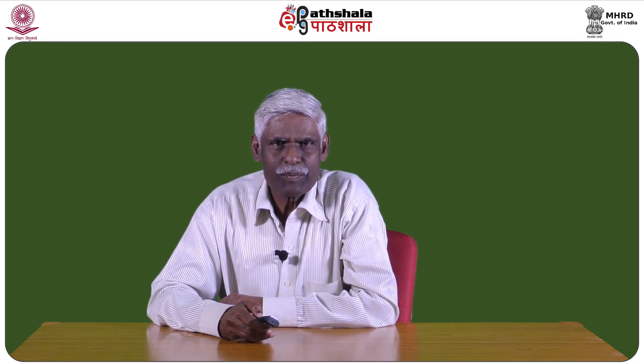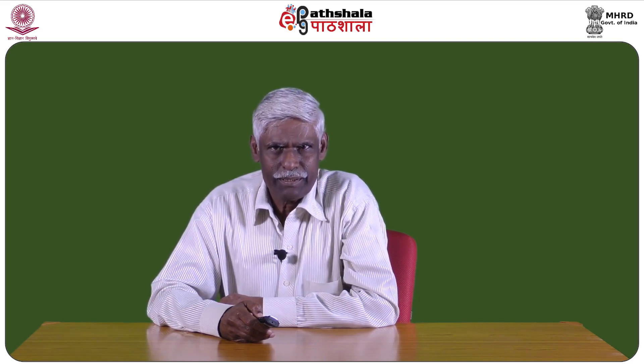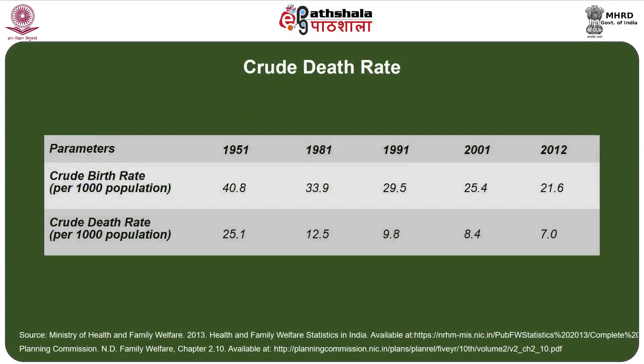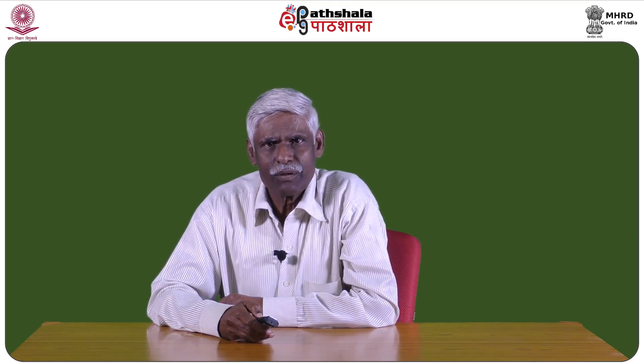Taking both birth and death rates together as natural increase, both vital rates are showing a steady decline. The crude birth rate came down from 40.8 in 1951 to 21.6 in 2012, and the death rate dropped from 25.1 in 1951 to 7.0 in 2012. This indicates that mortality has been significantly reduced, and while the birth rate has nearly halved, further reduction — especially in rural areas — remains a major focus.